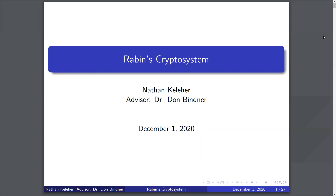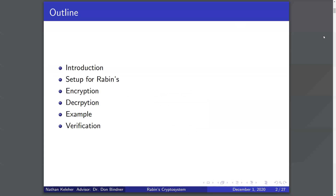Hello, my name is Nathan Kelleher and today I will be presenting my capstone project about Rabin's cryptosystem, advised by Dr. Bindner. Today I will walk through an introduction of Rabin's cryptosystem, talk about what it is and how it and other cryptosystems are used in today's society. I will then walk through the setup, the encryption and decryption process, walk through an example outlined in my paper, and also walk through the verification of the plaintext messages.